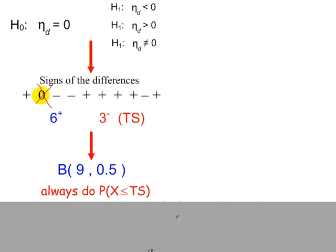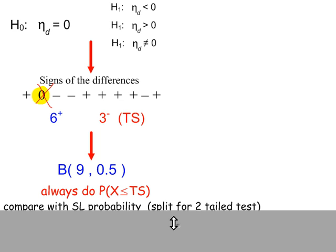And then you work out the probability of X less than or equal to your test statistic. So in this case, we would do P(X ≤ 3). Look up the probability from the binomial tables and compare it to the significance level probability.